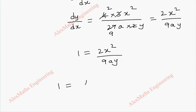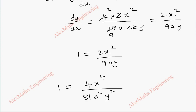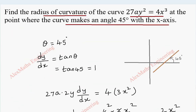Squaring both sides gives 1 = 4x⁴/81a²y². Since we need to substitute y² from the original equation, we use y² = 4x³/27a.